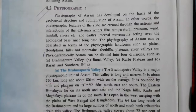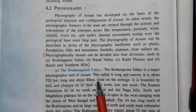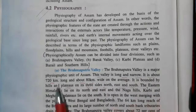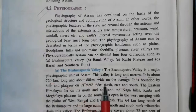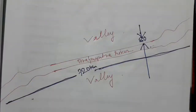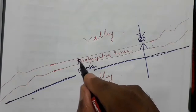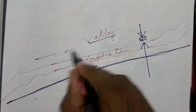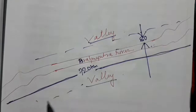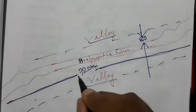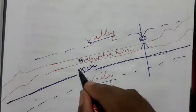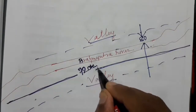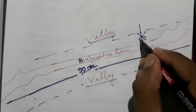The Brahmaputra Valley is important not only for Assam but for all the northeastern states. This valley is long and narrow — it is about 720 kilometers long and about 80 kilometers wide on average. Valley means the land on either side of a river, and this Brahmaputra Valley stretches 720 kilometers in length and 80 kilometers in width.